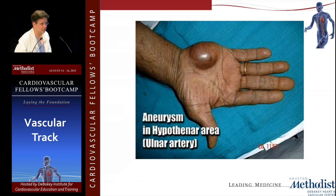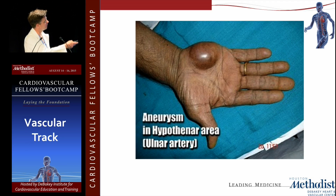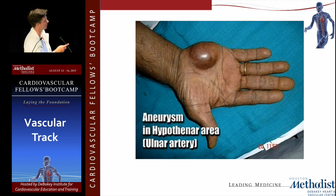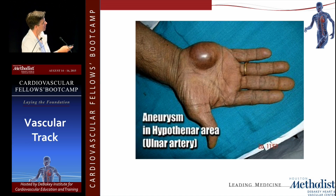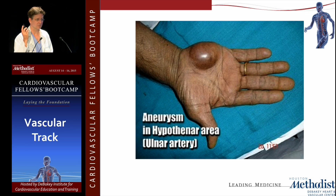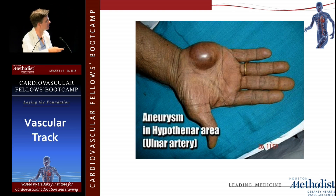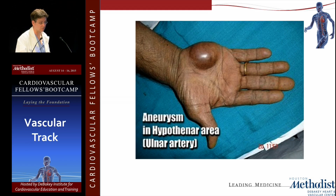Hypothenar hammer syndrome occurs in people using jackhammers — the ulnar artery passes over the bony prominence at the palm of the wrist, and you can get aneurysmal degeneration. It can present with a big bulge, but more commonly presents with digital ischemia — bluish discoloration and sometimes embolic spots. Picking this up on exam and confirming with subtraction angiography is really helpful. Microsurgery colleagues can go in and actually replace that vessel if needed.